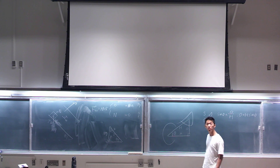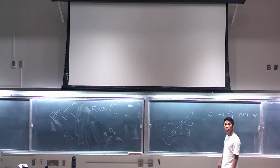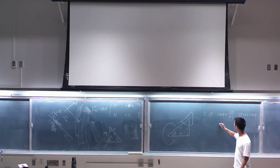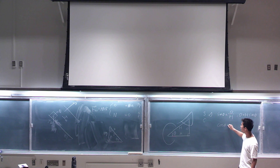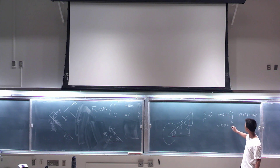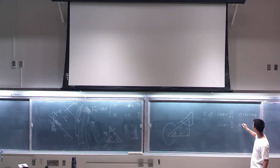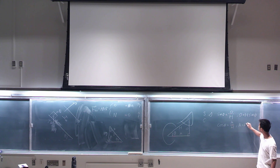Adjacent side and cosine: cosine will be adjacent side over hypotenuse, so if you want the adjacent side it's hypotenuse times cosine.